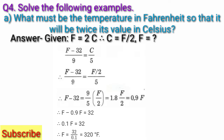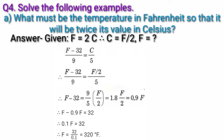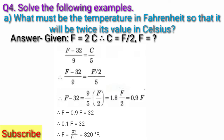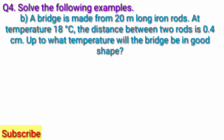So, 0.9F substituted gives: F − 0.9F = 32. Therefore, 0.1F = 32. Therefore, F = 32 / 0.1 = 320 degrees Fahrenheit.